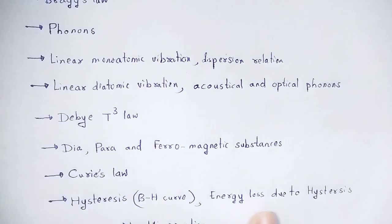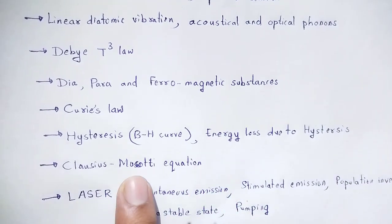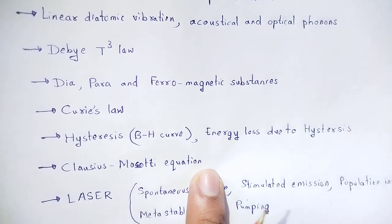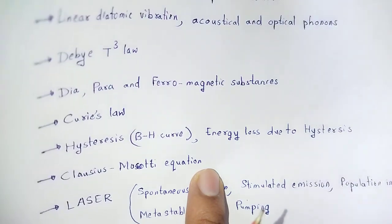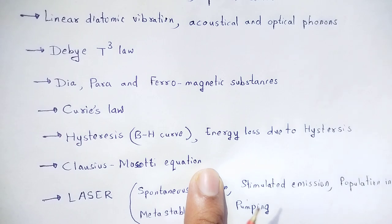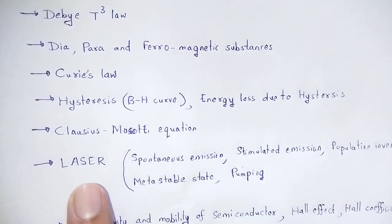Next: the Clausius-Mossotti equation — a most important equation. From the Clausius-Mossotti equation we can calculate polarizability. The mathematical form of the Clausius-Mossotti equation will be drawn out and discussed.